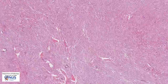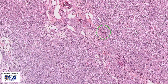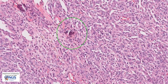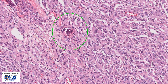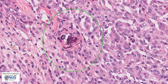Moving around, there is another feature here, and this is a calcification. If you look closely, you can see that there are some concentric rings. So this is a psammoma body, and psammoma bodies can also sometimes be seen in meningiomas.